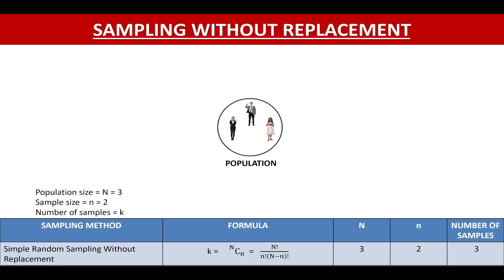The number of samples that we can get in case of sampling without replacement are given by N combination n, which is equal to 3. So we will get 3 samples.